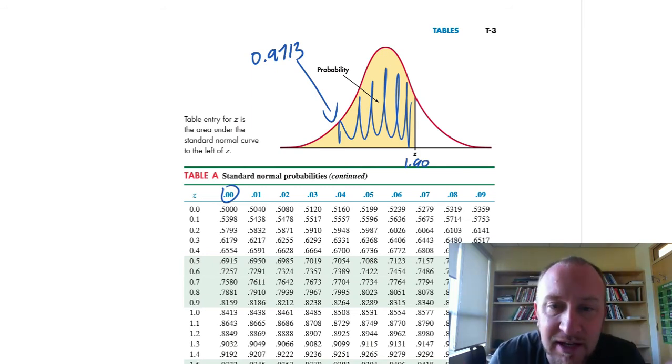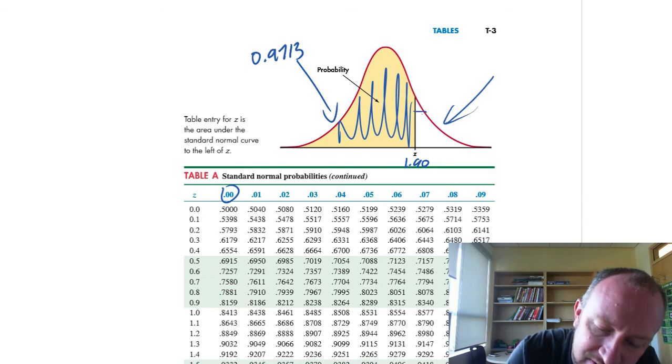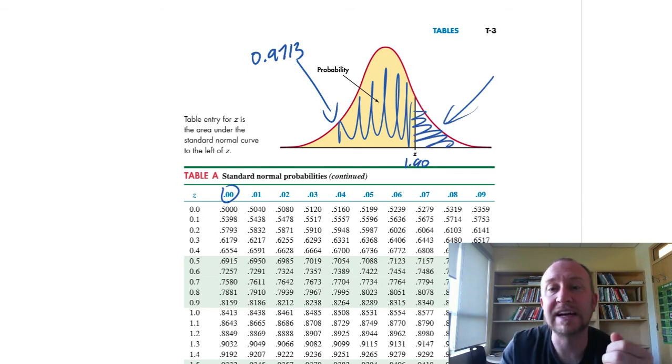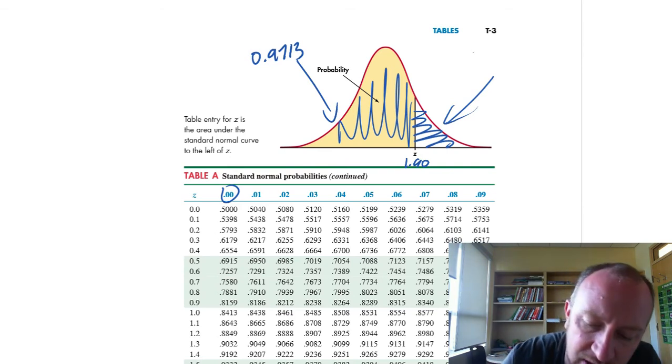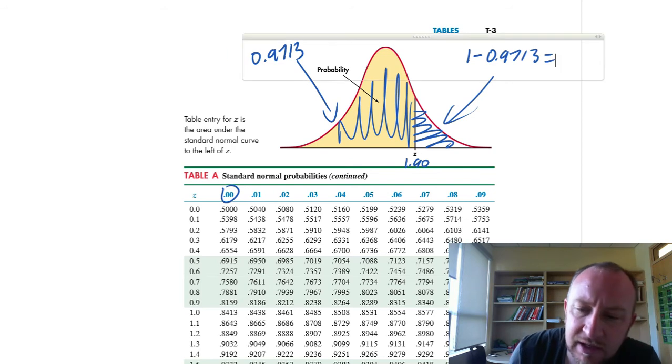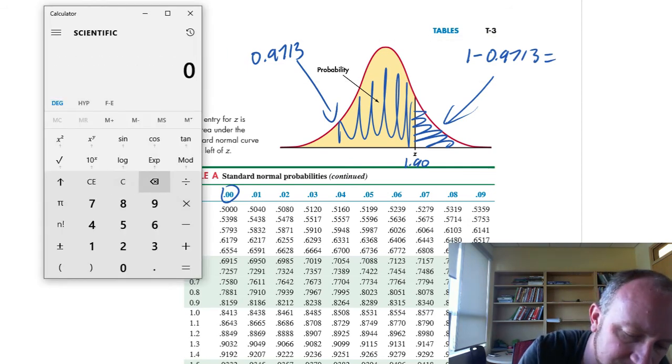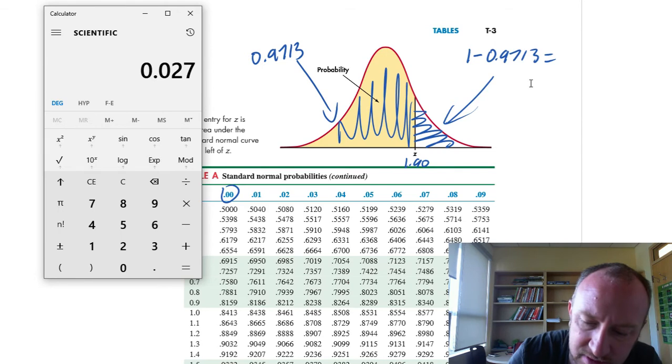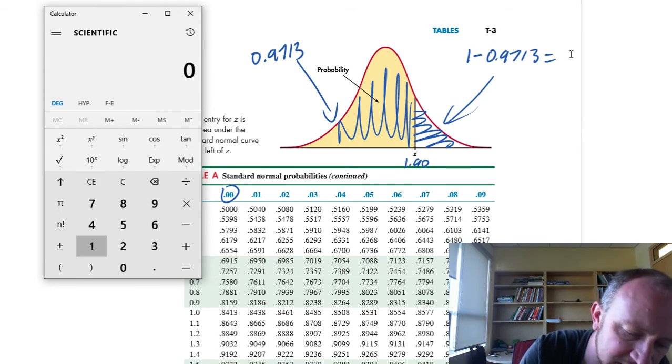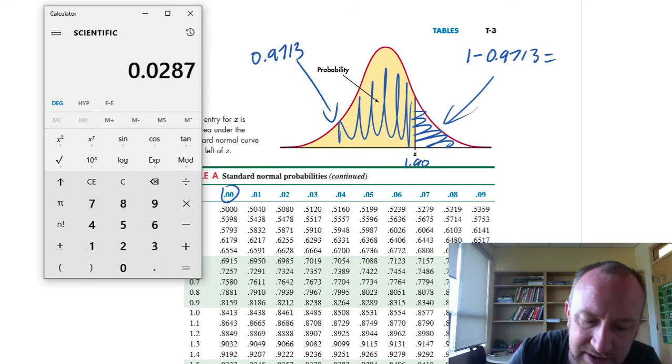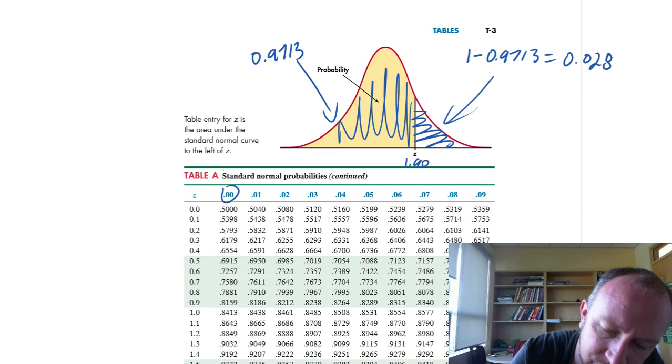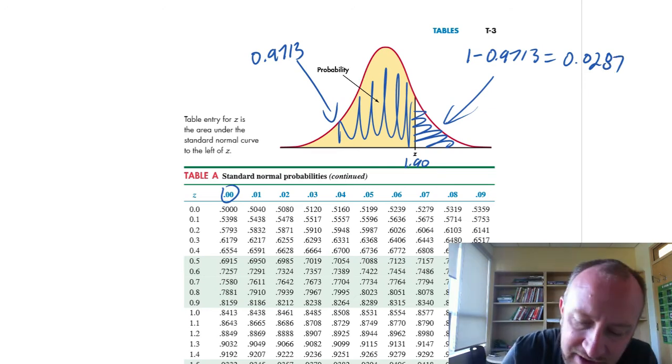But of course, this is an upper tail test that we're doing. So what I want is this region to the right of 1.9. So I can calculate 1 minus 0.9713, and that's going to give me, let's do this real quick, 1 minus 0.9713, 0.0287 is that upper tail.